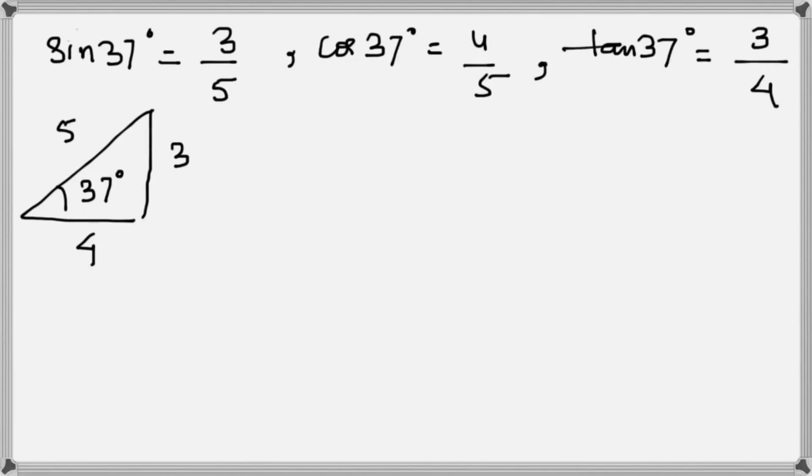The second important angle that you should remember is 53°. We have sin 53° equals 4/5, cos 53° equal to 3/5, and obviously you can tell me that tan 53° will be equal to 4/3.